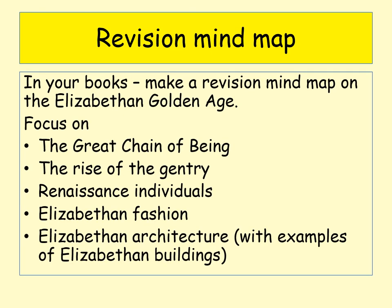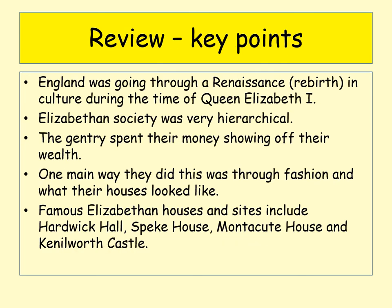Based on this information, make a revision mind map on the Elizabethan Golden Age. Make sure you understand the Great Chain of Being, the rise of the gentry, the key Renaissance individuals, Elizabethan fashion, and Elizabethan architecture — with specific examples of buildings like Speke Hall, Hardwick Hall, and Kenilworth Castle, including who owned them. Key takeaways: England was going through a Renaissance; Elizabethan society was very hierarchical; the gentry spent money showing off their wealth through fashion and architecture. Thanks very much for listening — if you've got any questions, please do let me know.